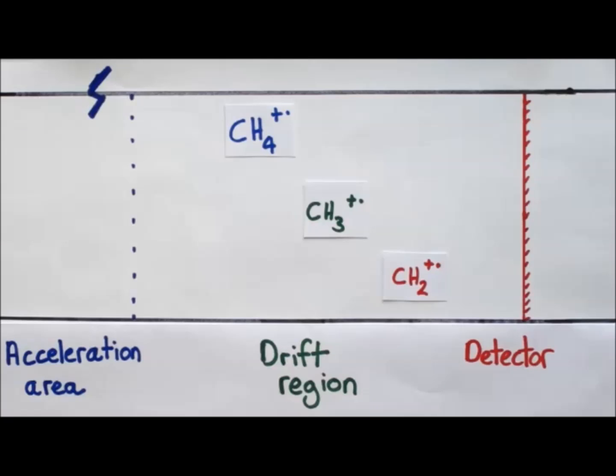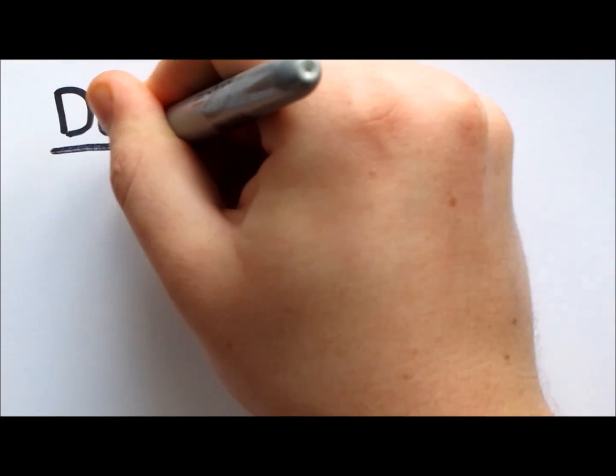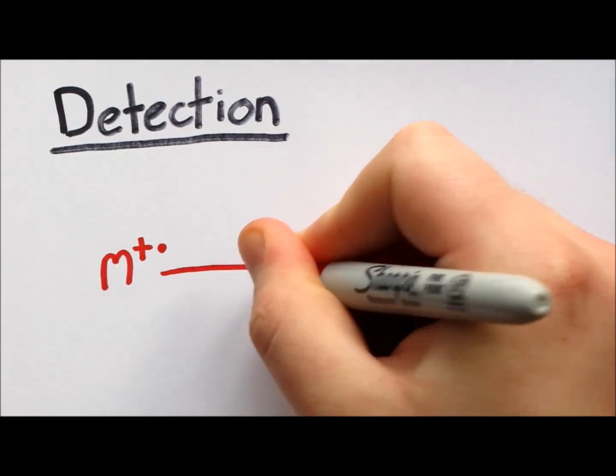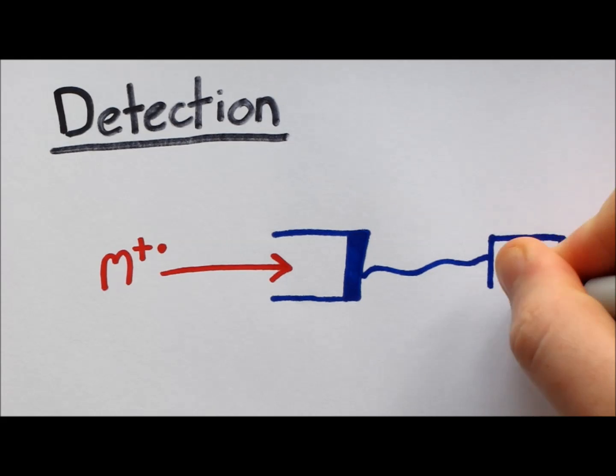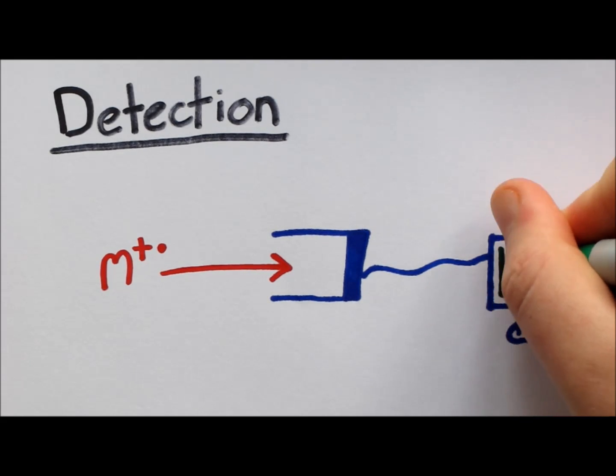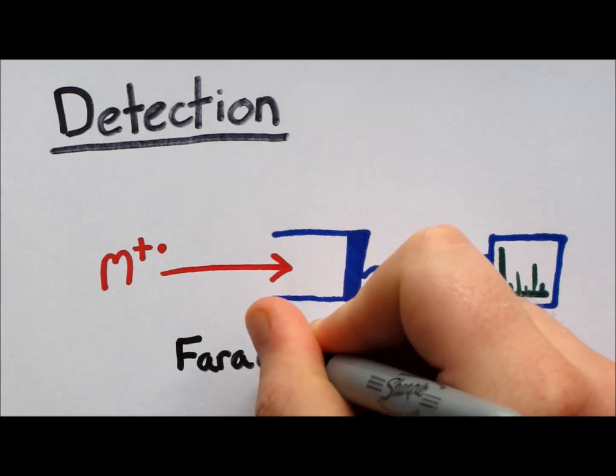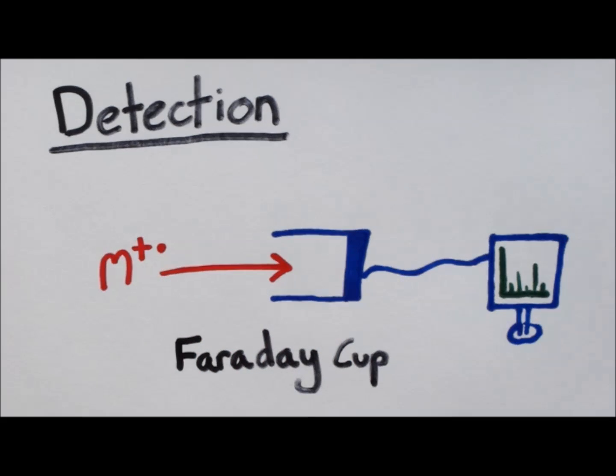At the end of the drift region is the detector. The detector is simply a metal plate that when hit by an ion gets a small charge induced. This is then discharged to give a current proportional to the number of ions hitting the detector. This allows the data to be supplied to a computer. This type of detector is known as a Faraday cup.